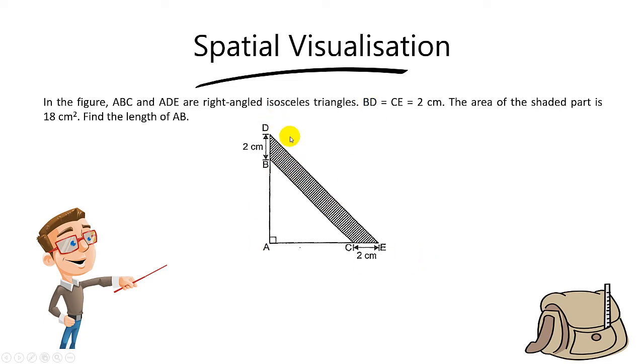The question also says that BD equals the length of CE, which is equal to 2cm. The area of the shaded part, which is this part here, is 18cm². We need to find the length of AB.